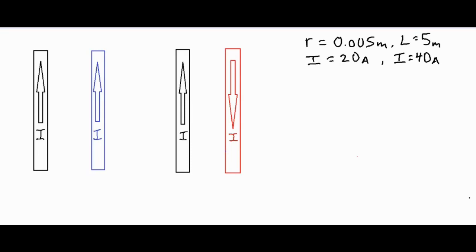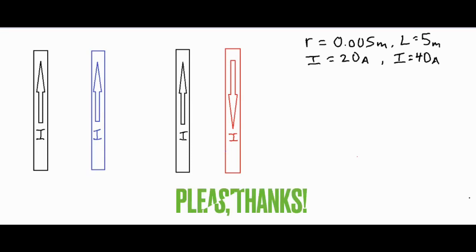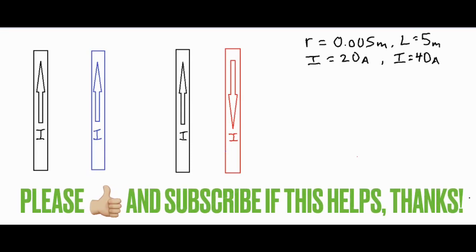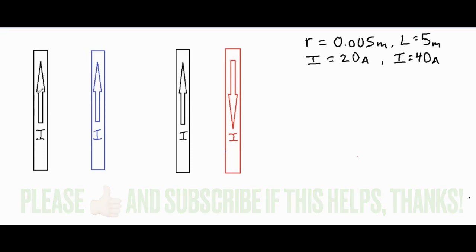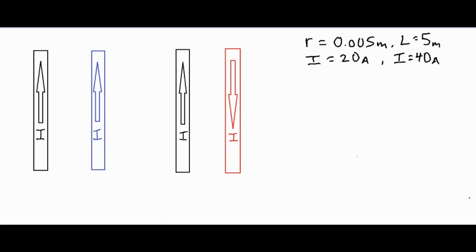In this video we're going to be taking a look at two scenarios where we have current-carrying wires that are either sending current in the same direction or the opposite direction. First we're going to analyze the magnetic fields and the forces to see if they attract or repel one another, and then we're going to calculate exactly what that force is with some exact values.